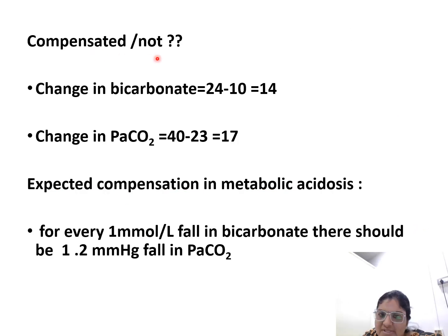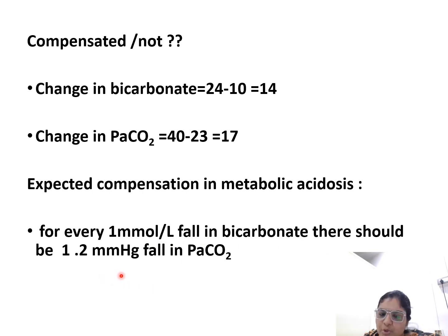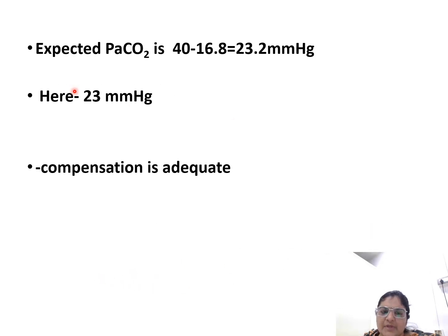Now we check whether compensation is adequate. The change in bicarbonate is 14 and the change in pCO2 is 17. The expected compensation in metabolic acidosis is: for every 1 mmol/L fall in bicarbonate, there should be a 1.2 mmHg fall in pCO2. So the expected pCO2 is 23.2, and the measured pCO2 is 23 — therefore compensation is adequate.